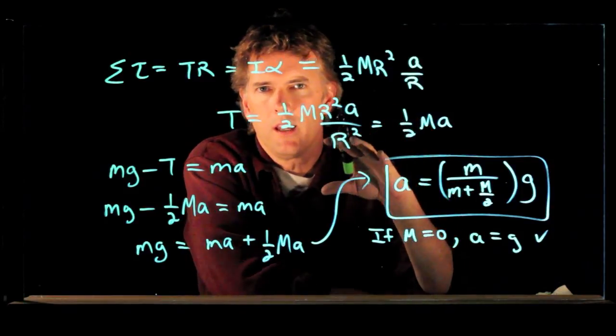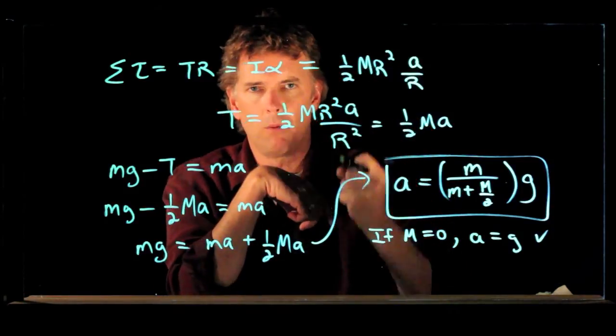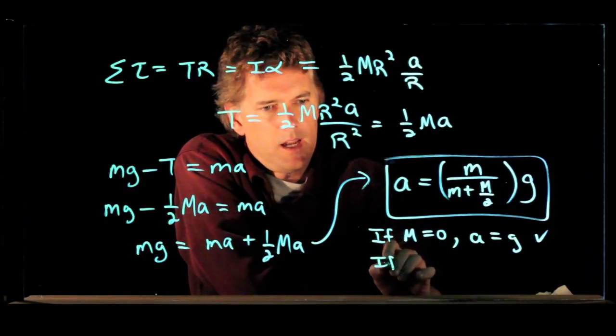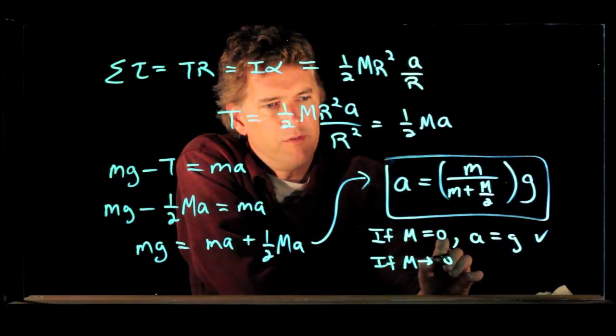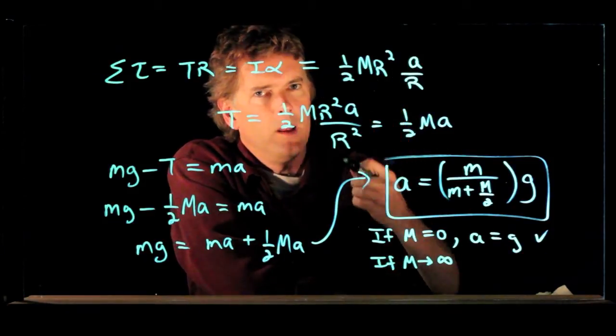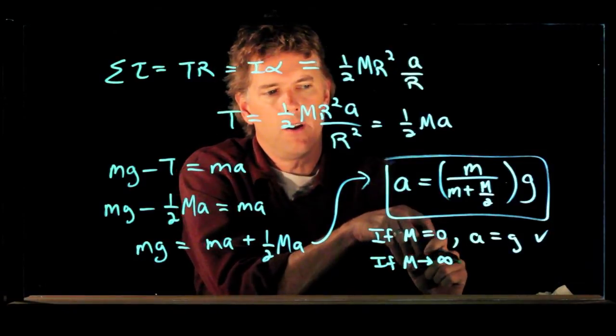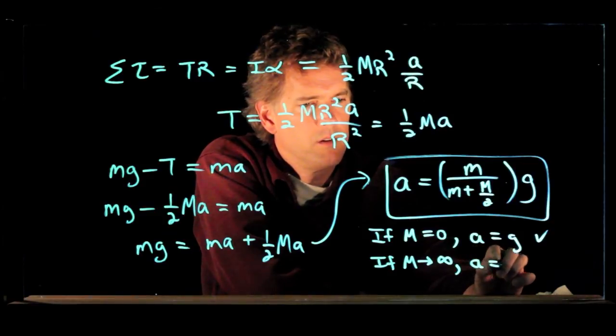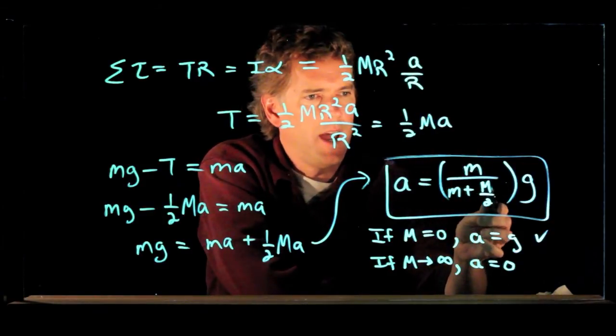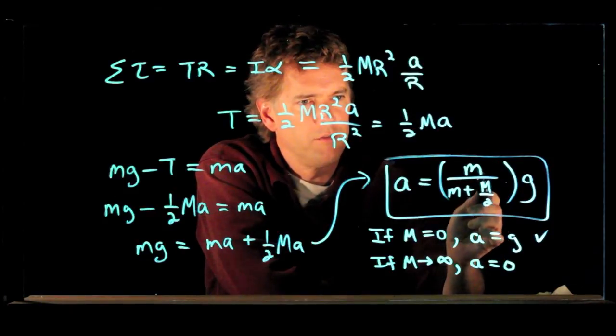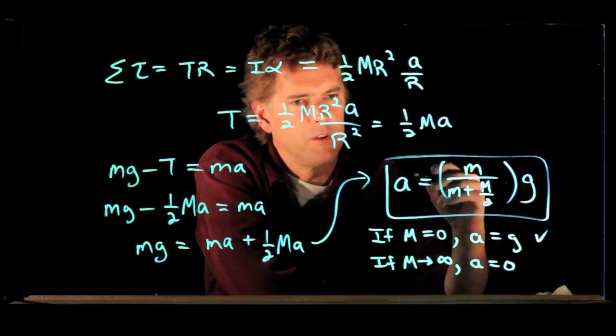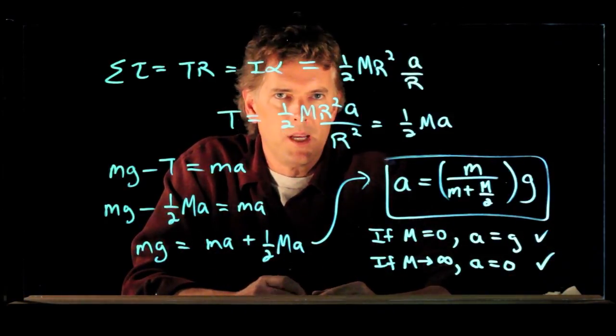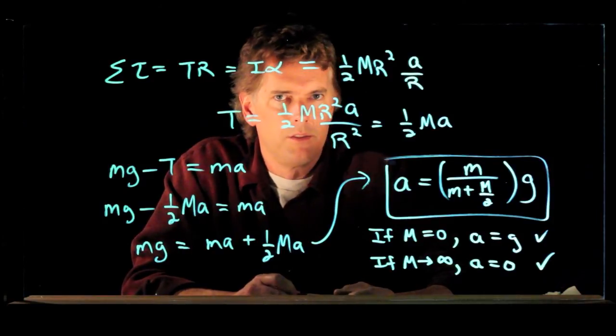What if the pulley is so massive that that little box can't get it rotating hardly at all? In that case, if big M goes to infinity, then that little box shouldn't be able to pull down on it at all. And we should have A going to zero. Is that what happens in our equation? Yes. Big M is in the denominator. So if that goes to infinity, this whole thing goes to zero. A goes to zero. So it looks like that answer is making sense. And indeed that is the correct answer.